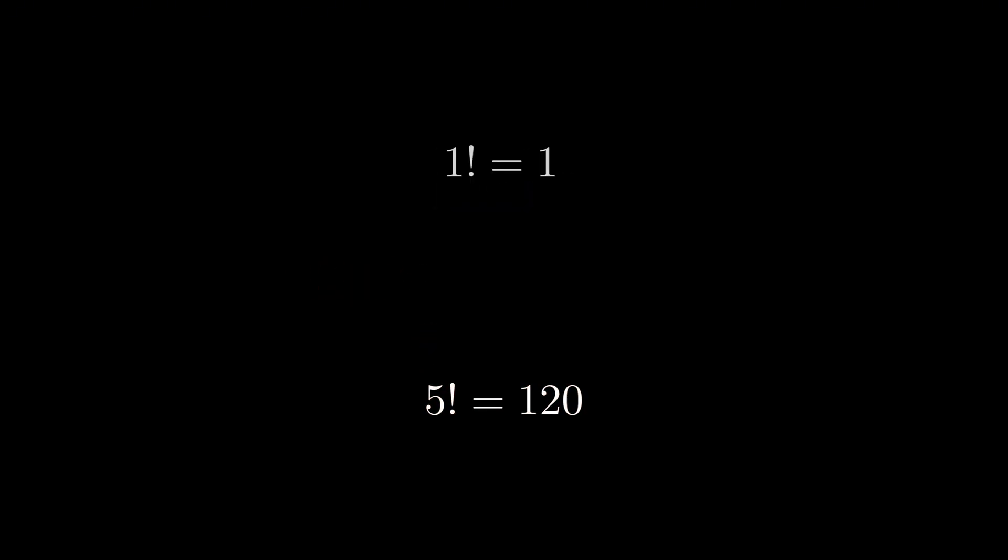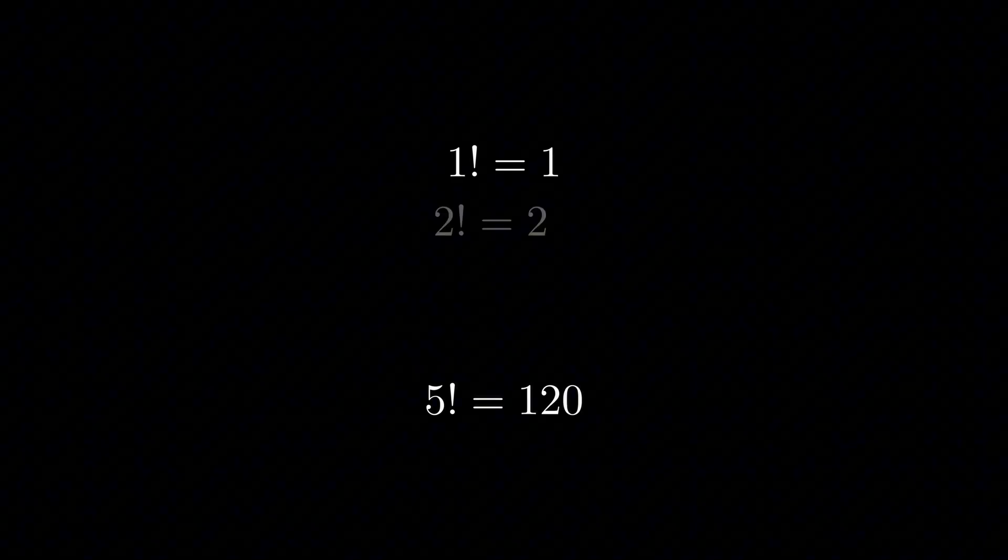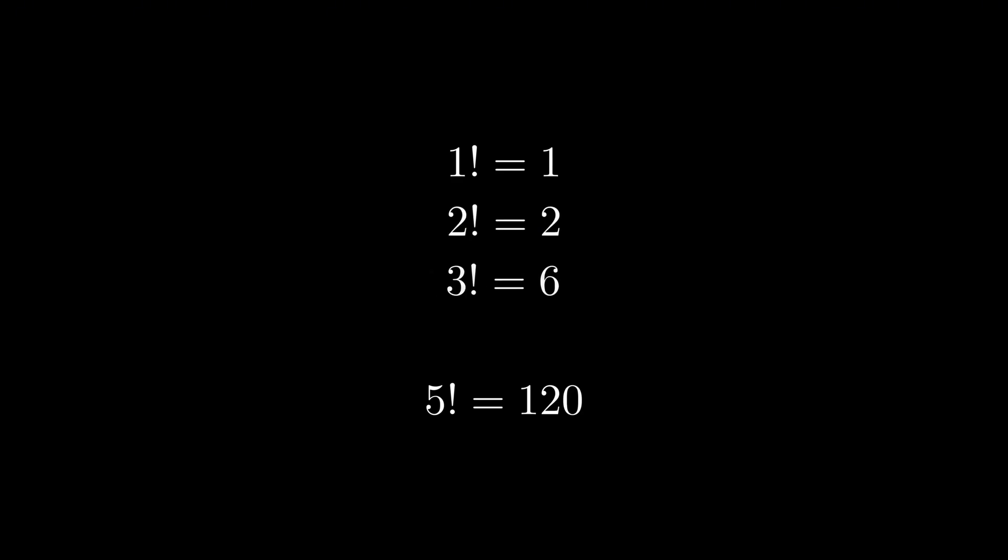It starts small with 1 factorial equals 1, 2 factorial equals 2. But then it explodes really quickly and by the time you reach just 4 factorial, you're already at 24 and 5 factorial shoots up to 120.